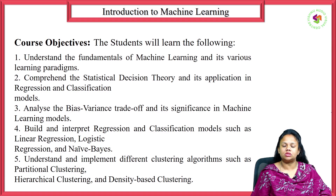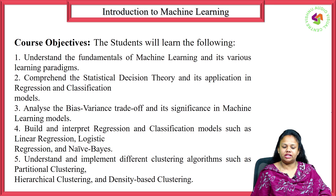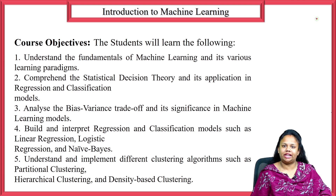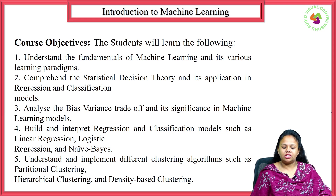First, we learn the course objectives and then course outcomes. The course objectives are: understand the fundamentals of machine learning and its various learning paradigms; comprehend statistical decision theory and its application in regression as well as classification; analyze the bias-variance trade-off and its significance in machine learning; build and interpret regression and classification models such as linear regression, logistic regression, and Naive Bayes; and understand and implement different clustering algorithms such as partitioning clustering, hierarchical clustering, and density-based clustering.